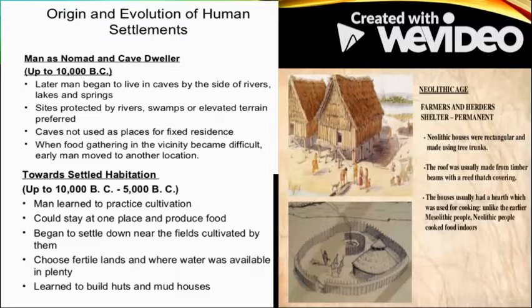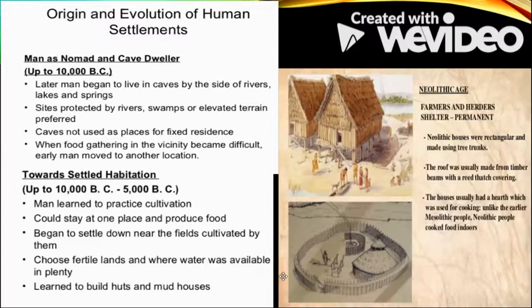Instead of being a nomad, man now started to have a permanent residence, a permanent shelter. He started making various kinds of huts and then houses. Because of cultivation, he wanted to settle close to fertile lands. Fertile lands are best found in river valleys, which gave them fertile land, water, and mud for their houses.